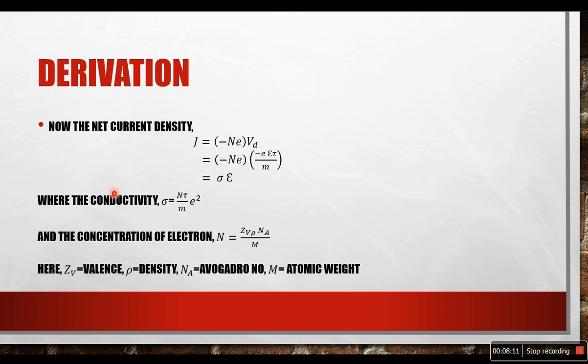Considering the above observations, we will derive Ohm's law now. If we write the net current density J, which can be written as J equals minus N into E into Vd. Here N is the concentration of electron, and N equals Zv into Rho into Na by m. Where Zv is valency, Rho is density, Na is Avogadro number and m is the atomic weight. From here we can write J equals sigma into epsilon, where sigma is the conductivity and sigma equals N into tau into E square divided by m.